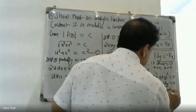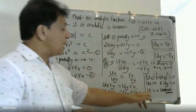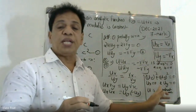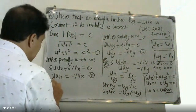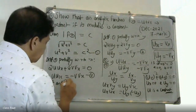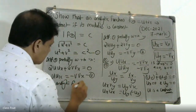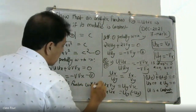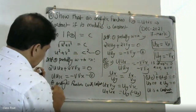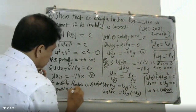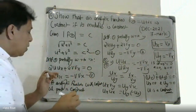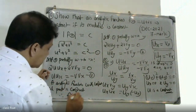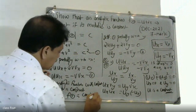Since u is constant — that is, the real part of the complex function is constant — and an analytic function with a constant real part is itself constant, we conclude that f(z) is constant. This completes the proof.